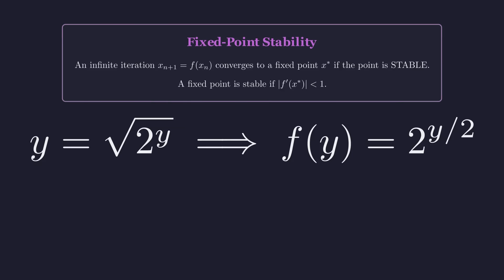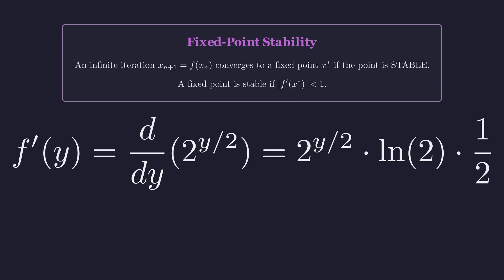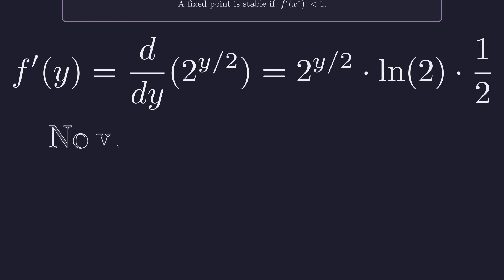Our iteration function is f of y equals 2 to the power of y over 2. First, we need to find its derivative. Using the chain rule for exponentials, the derivative f prime of y is the original function, 2 to the y over 2, times the natural log of the base, 2, times the derivative of the exponent, which is 1 half.